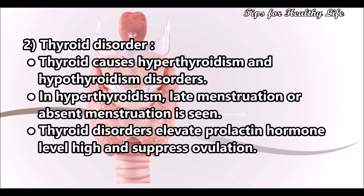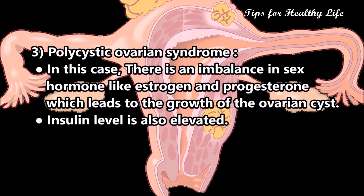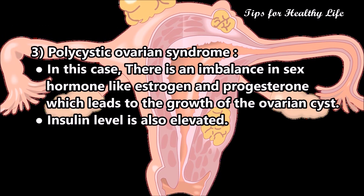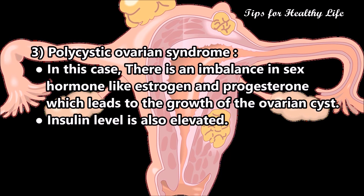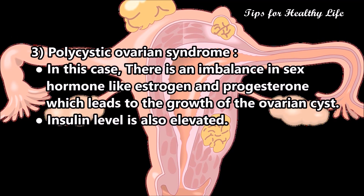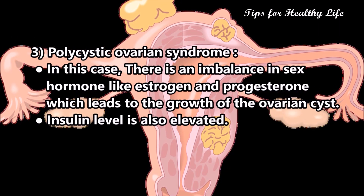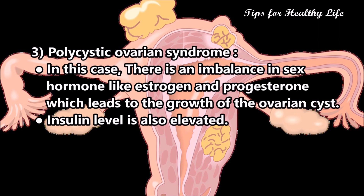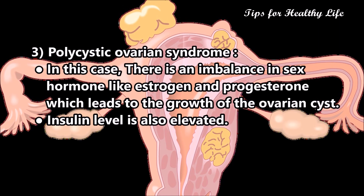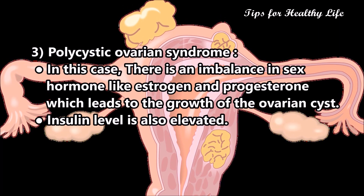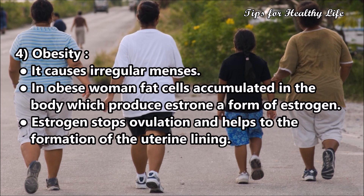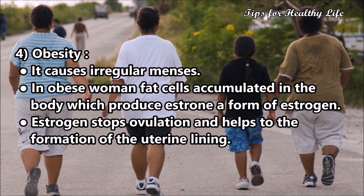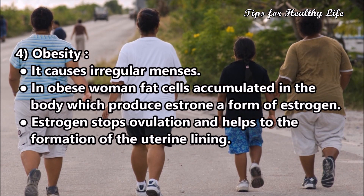Cause 3: Polycystic ovarian syndrome (PCOS). In this condition there is an imbalance in sex hormones like estrogen and progesterone, which leads to the growth of ovarian cysts. Insulin levels are also elevated.